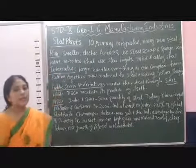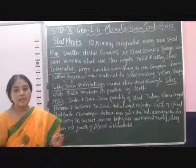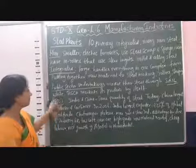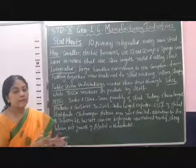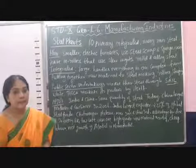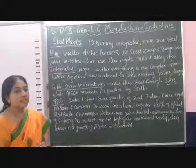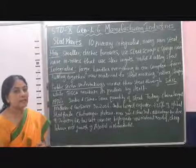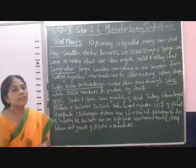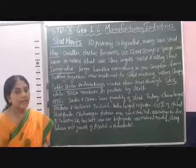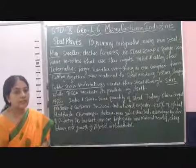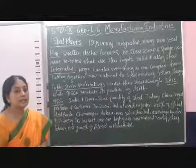In India we have almost 10 integrated steel plants. Integrated itself means joined together — many processes are joined together. In India there are many steel plants in the public sector and many in the private sector. In all the public sector undertakings, steel is marketed with the help of Steel Authority of India Limited. While TISCO — Tata Iron and Steel Company — which is in the private sector, markets their steel themselves.